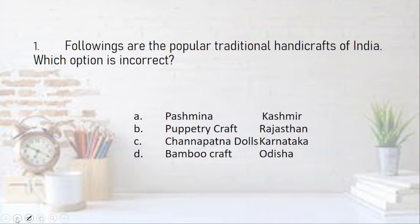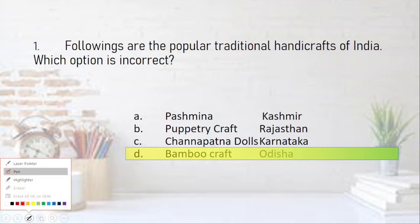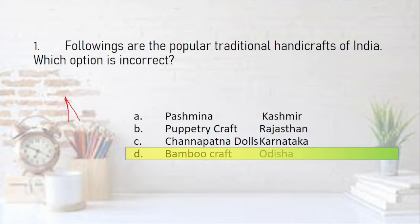The first question is about popular traditional handicrafts of India — you have to match the state with the art. Pashmina belongs to Kashmir, puppetry craft to Rajasthan, Channapatna doll to Karnataka, and bamboo craft to Odisha. Which one is incorrect? Bamboo craft is not from Odisha — bamboo craft belongs to Assam. So that option is incorrect.